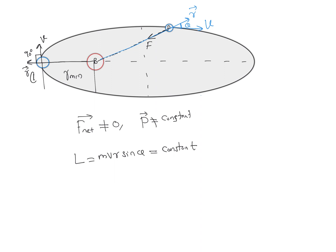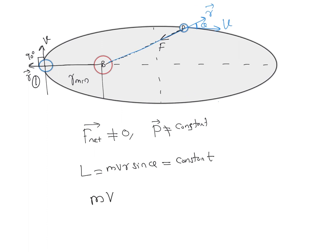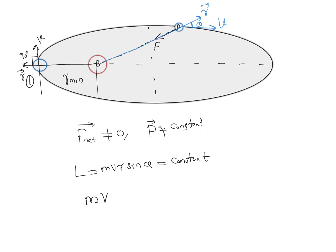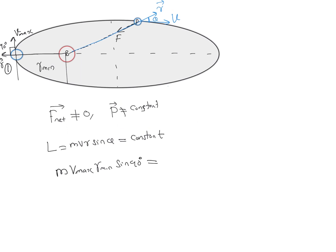At point 1, where r is minimum, angular momentum = m × v_max × r_min × sin90. Since angular momentum is constant, where r is minimum the velocity will be maximum. So at this closest point, the planet moves with maximum velocity. At the farthest point, the distance r is maximum, and by conservation of angular momentum, the velocity will be minimum.